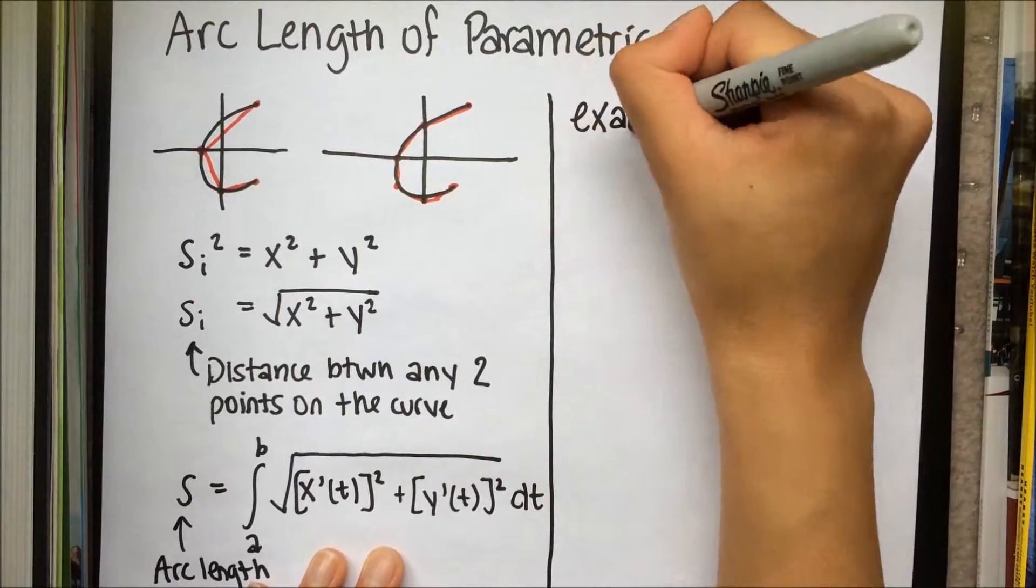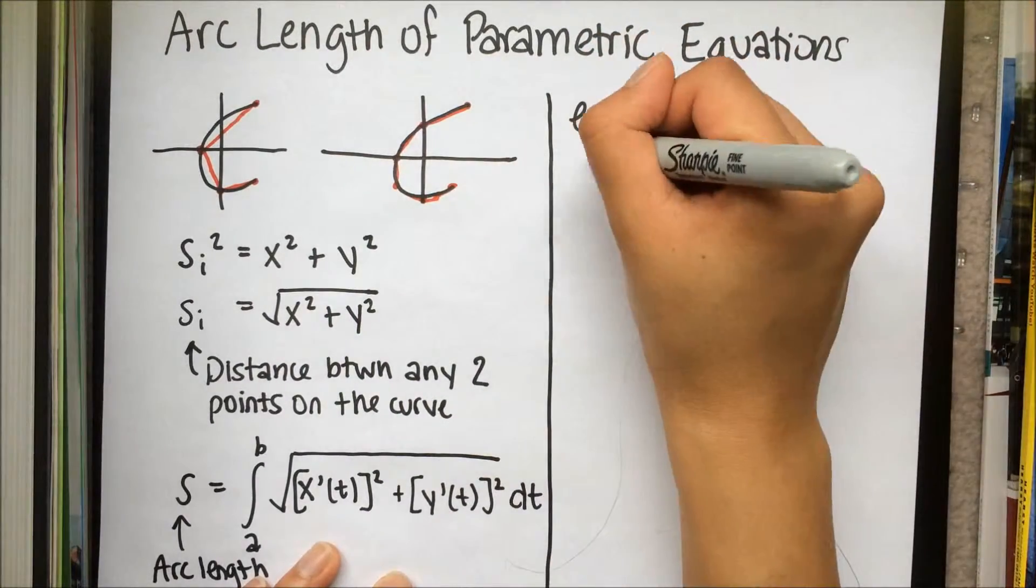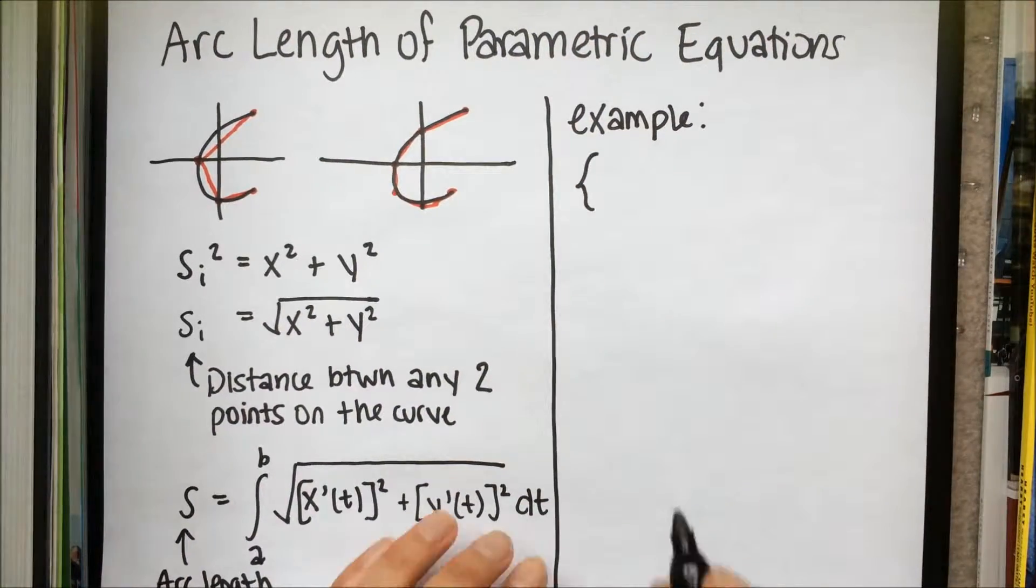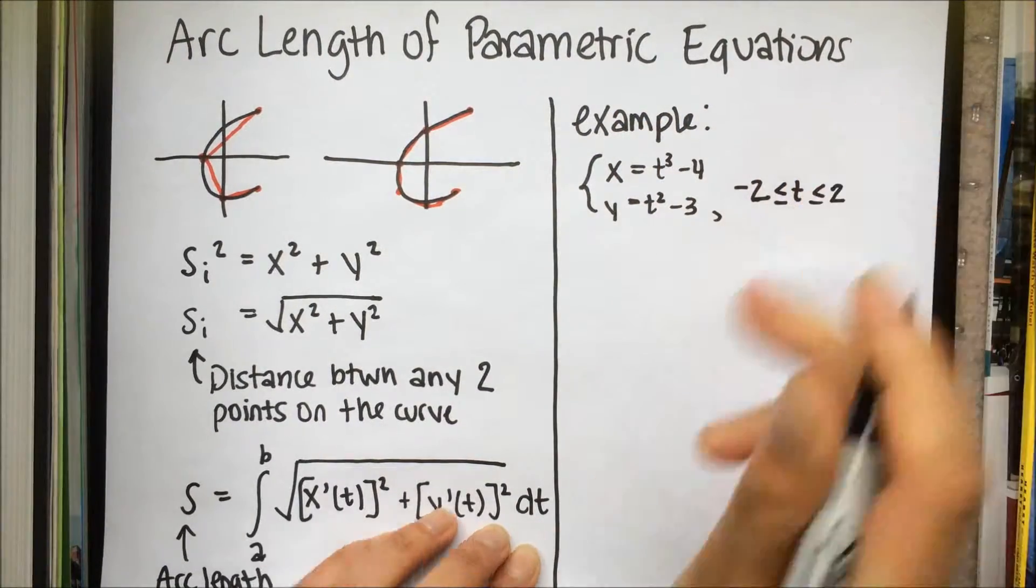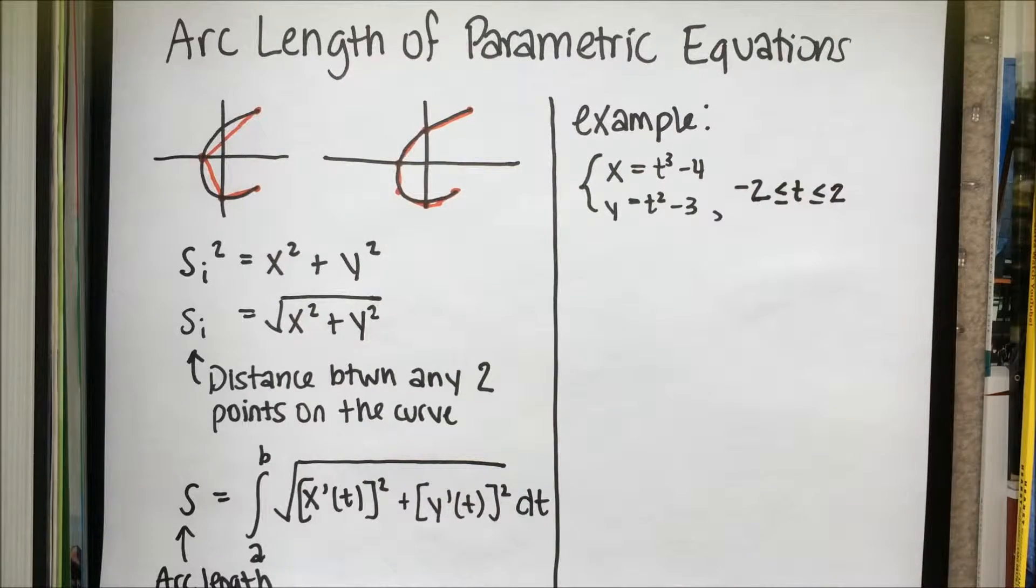Now, let's do an example. We will calculate the arc length for the parametric equation x equals t cubed minus 4, y equals t squared minus 3, when t is greater than or equal to negative 2 and less than or equal to positive 2.